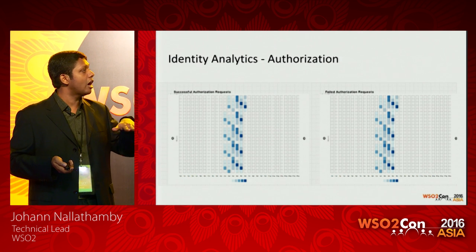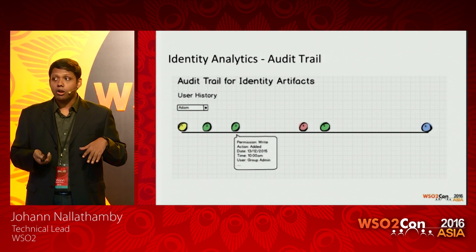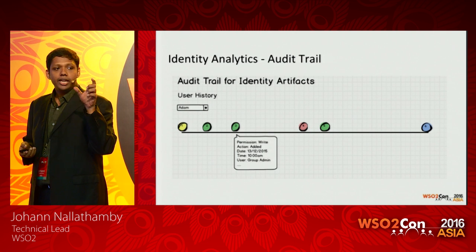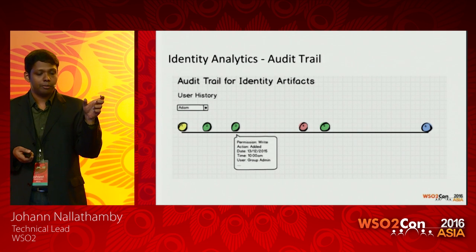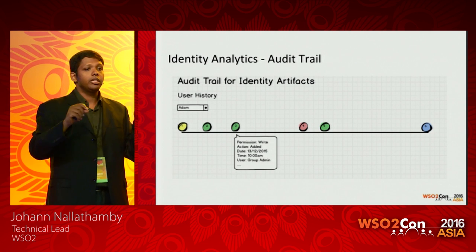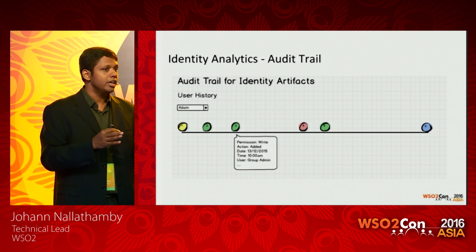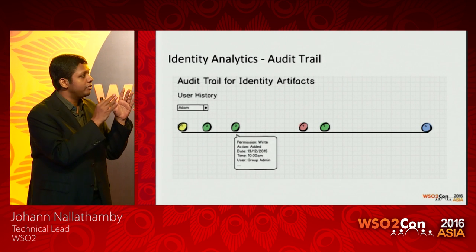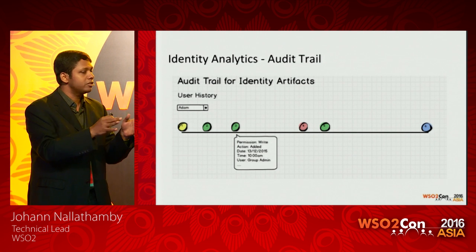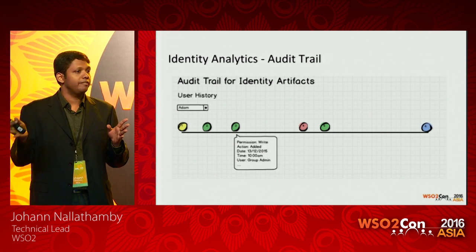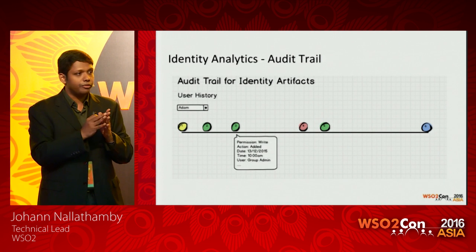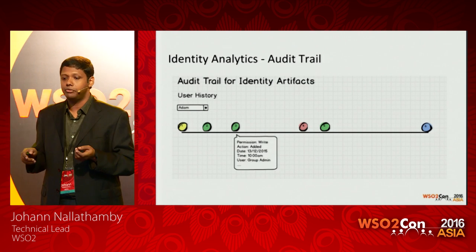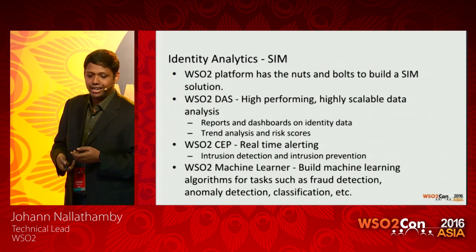We can provide drill-down details on authorization failures. Audit trails are very important in identity — given any identity entity in the IAM system, you should be able to draw out the complete lifecycle of that identity. For a user, you should see the full history from when they were provisioned, roles and permissions assigned, when they were deprovisioned, when their account was locked or unlocked. Audit trails apply not just to users but also to roles, devices, and other entities.